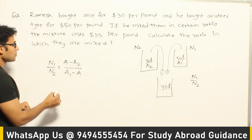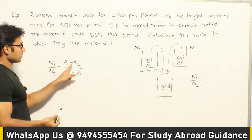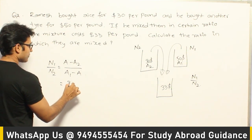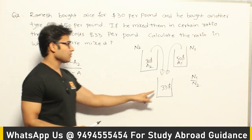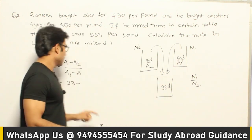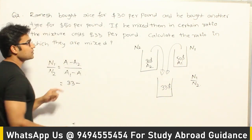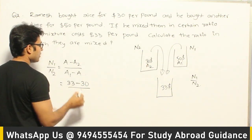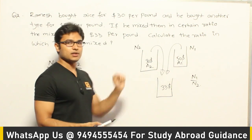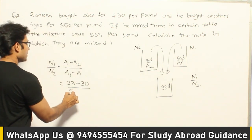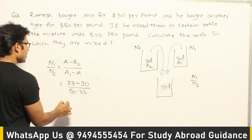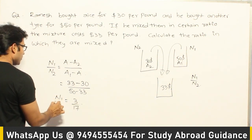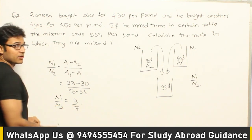Applying the formula: A is the average of the final mixture, which is 33. A2 is the lower value, which is 30. A1 is the higher value, which is 50. So N1/N2 = (33 - 30) / (50 - 33) = 3/17. Therefore, N1 by N2 is 3 by 17.